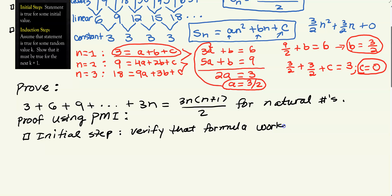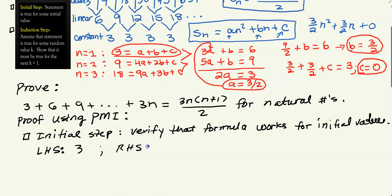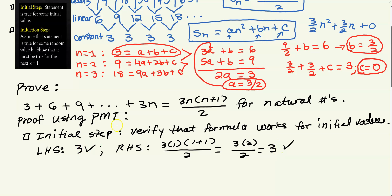Step 1 — the initial step: verify that the formula works for the initial value. When n = 1, the left-hand side is just 3. The right-hand side is 3·1·(1+1)/2 = 3·2/2 = 3. Left-hand side equals right-hand side, so the equation works for the initial value n = 1.